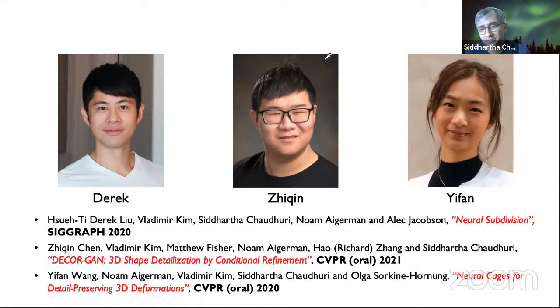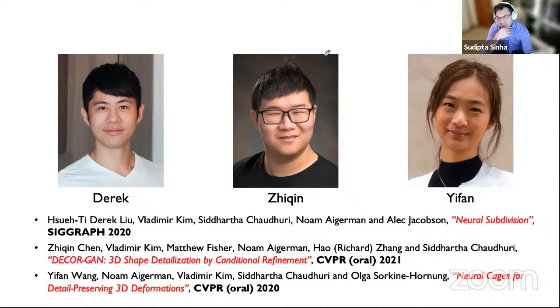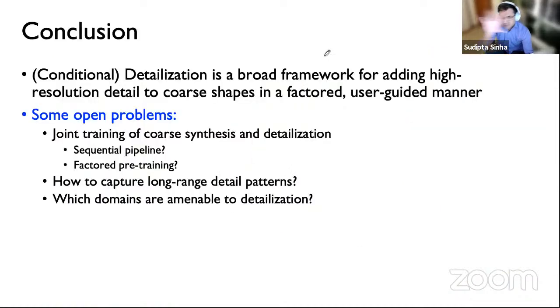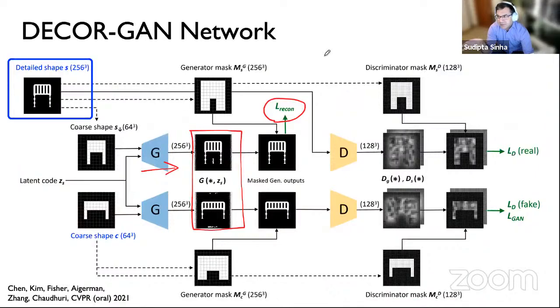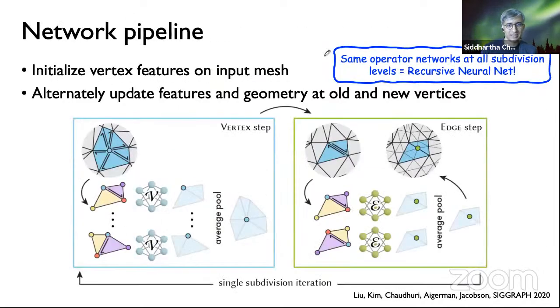Sudipta: Interesting and very intuitive work. I had a question about neural subdivision. It looks like the neural network is trained on a single exemplar. When you showed an example with one coarse shape and four different exemplars, does that mean you trained four different neural networks — one for each exemplar?